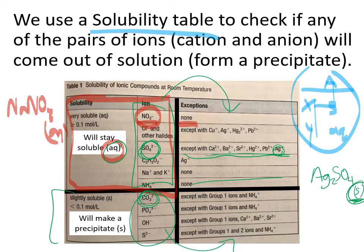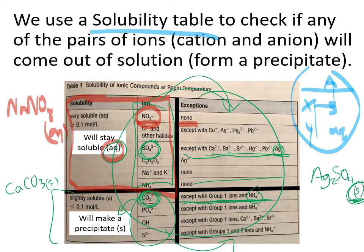For example, carbonate tends to be insoluble except when it's with any of the alkali metals or ammonium. So if you had calcium carbonate — there's the carbonate, and calcium is not one of the exceptions — that means calcium carbonate is insoluble. That's how the solubility table works. We look up the products of our double displacement reaction, find them on this table, and decide whether they're aqueous or solid. If one of the products is solid, we have a reaction; if both are aqueous, we do not.